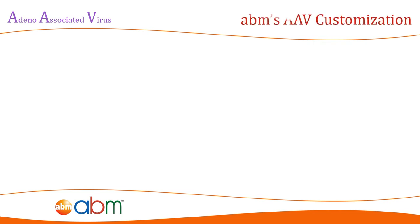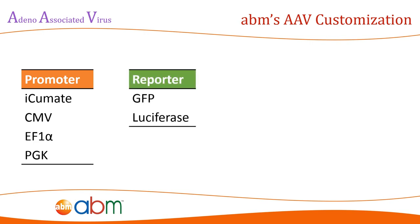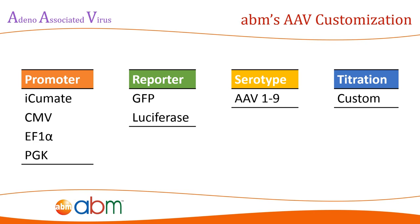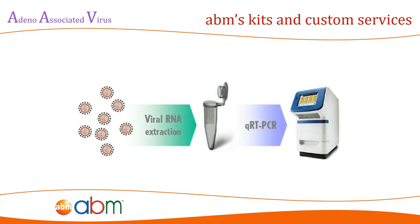ABM's AAV products come with a wide range of customization options. Available promoters include CMV, PGK, and EF1A. Reporter choices include luciferase or GFP. AAV serotypes 1 to 11 are available, as well as custom AAV titrations. ABM can also perform custom AAV services including custom AAV cloning and packaging services. ABM also offers a custom AAV titration qPCR assay, which includes master mixes, reagent mixes, and all other necessary components to perform AAV titration analysis.